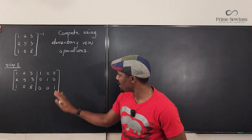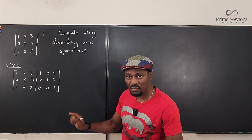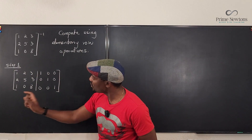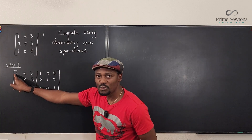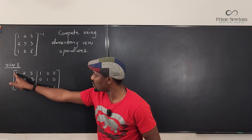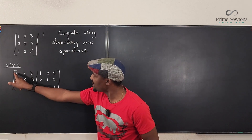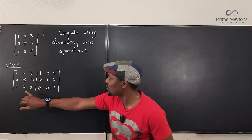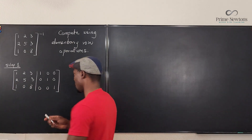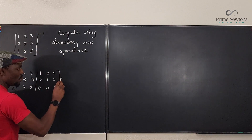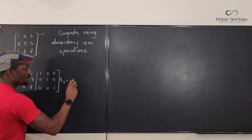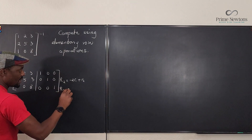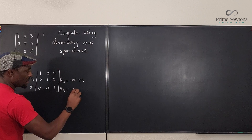The first move we're going to make is to get zeros under this first one. We're going to add minus two of row one to row two. If we multiply the first row by minus two and add it to row two, we get a zero. If we take minus one of row one and add it to row three, we get a zero there too. So: new row two = -2·R1 + R2, and new row three = -R1 + R3.